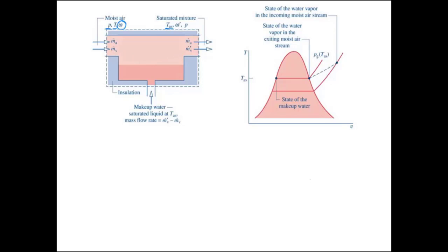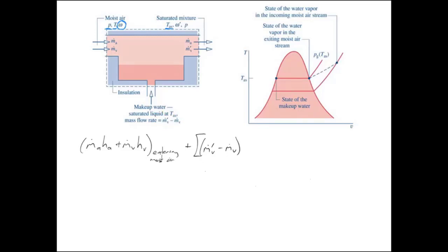Let's write the energy balance equation for this process. Looking at the entering air, we have the mass flow rate of the air times the enthalpy of that air, plus the mass flow rate of the vapor times the enthalpy of that vapor — that's all the entering moist air. Plus the makeup water, which is m-dot-prime: the mass flow rate of the exiting vapor minus the mass flow rate of the entering vapor, multiplied by the enthalpy of the water.